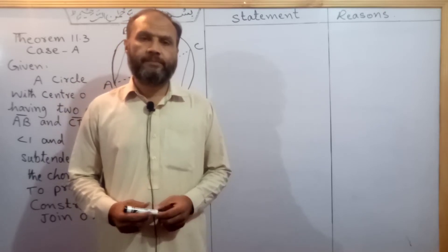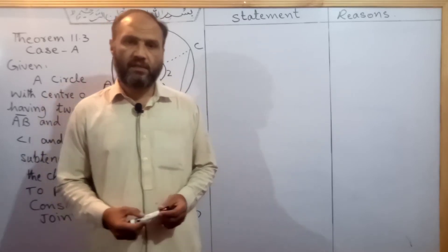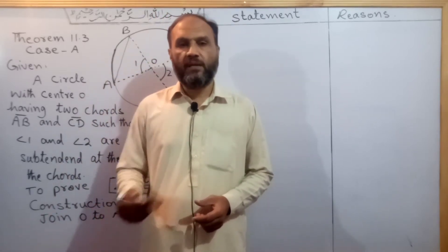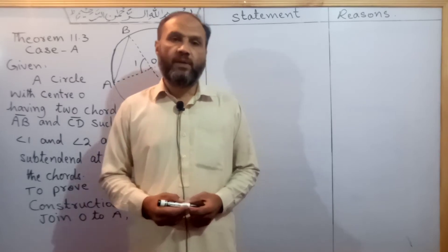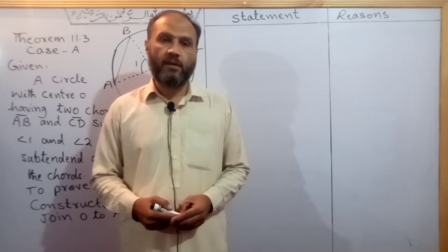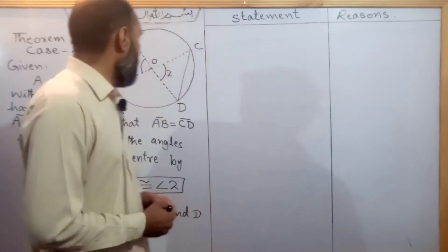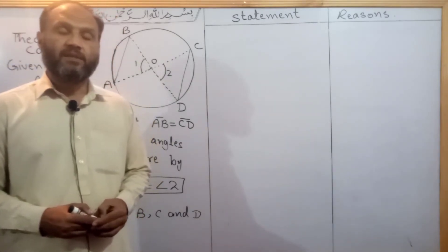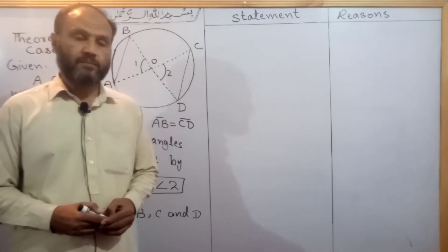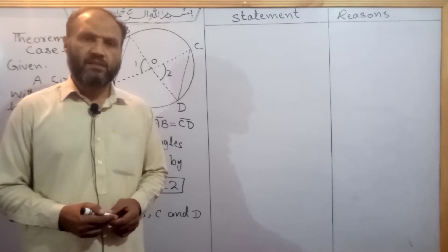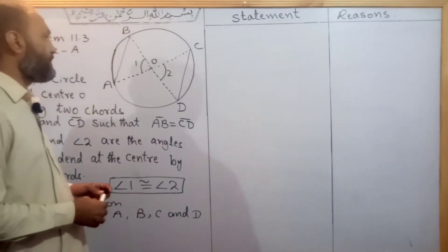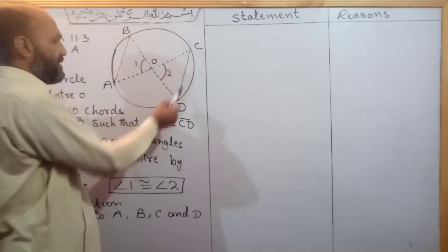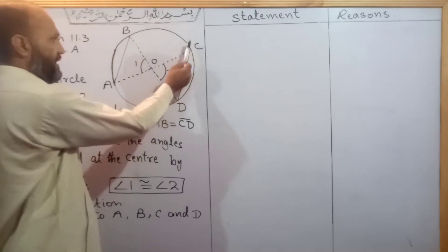The first theorem is about one circle in Case A, and the second one is about two circles in Case B. The statement involves two equal chords and equal angles in the circle.